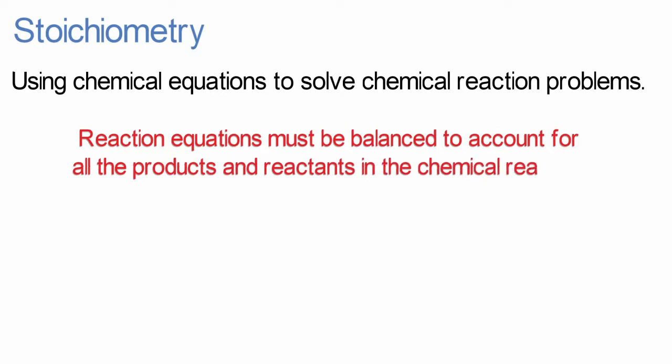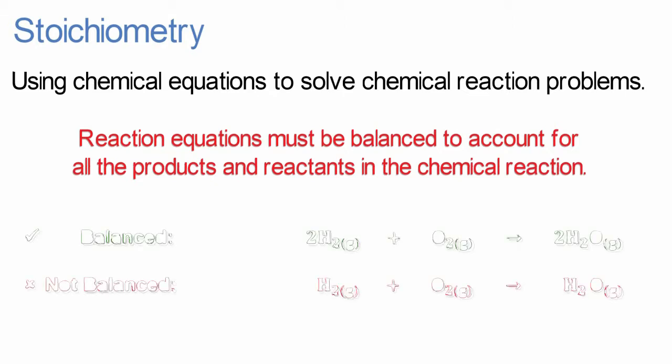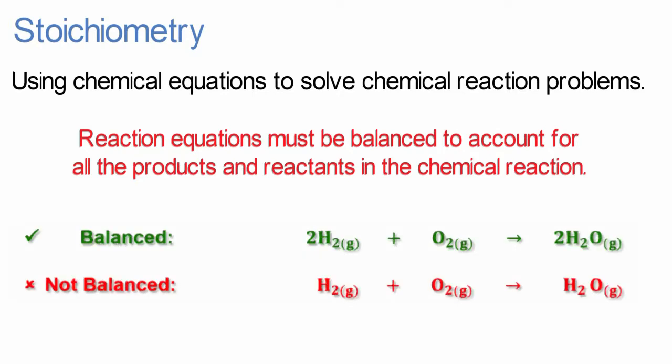Reaction equations must be balanced to account for all the products and reactants in the chemical reaction. Here is the chemical equation for water as an unbalanced and balanced equation. In the unbalanced equation, there is an unequal amount of oxygen atoms on the reactant side compared to the product side of the reaction equation.